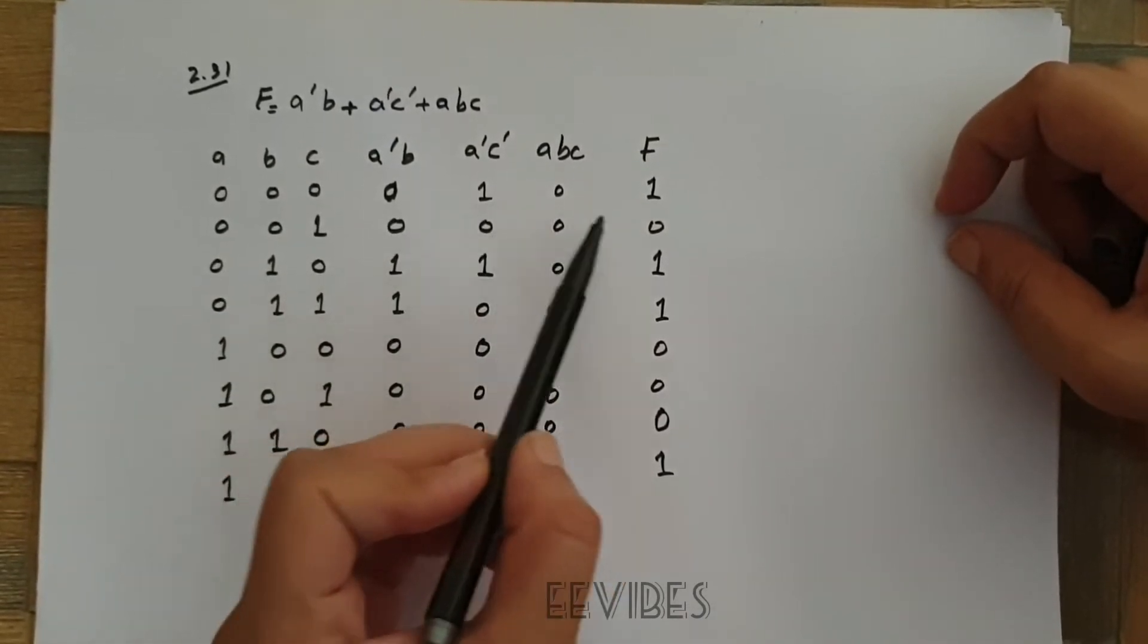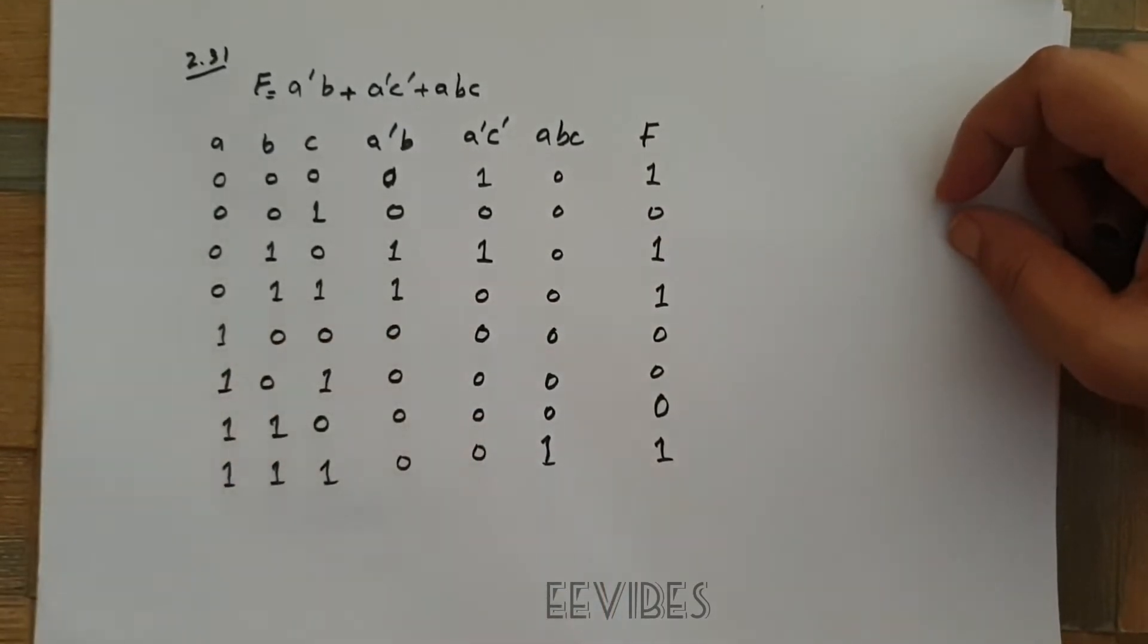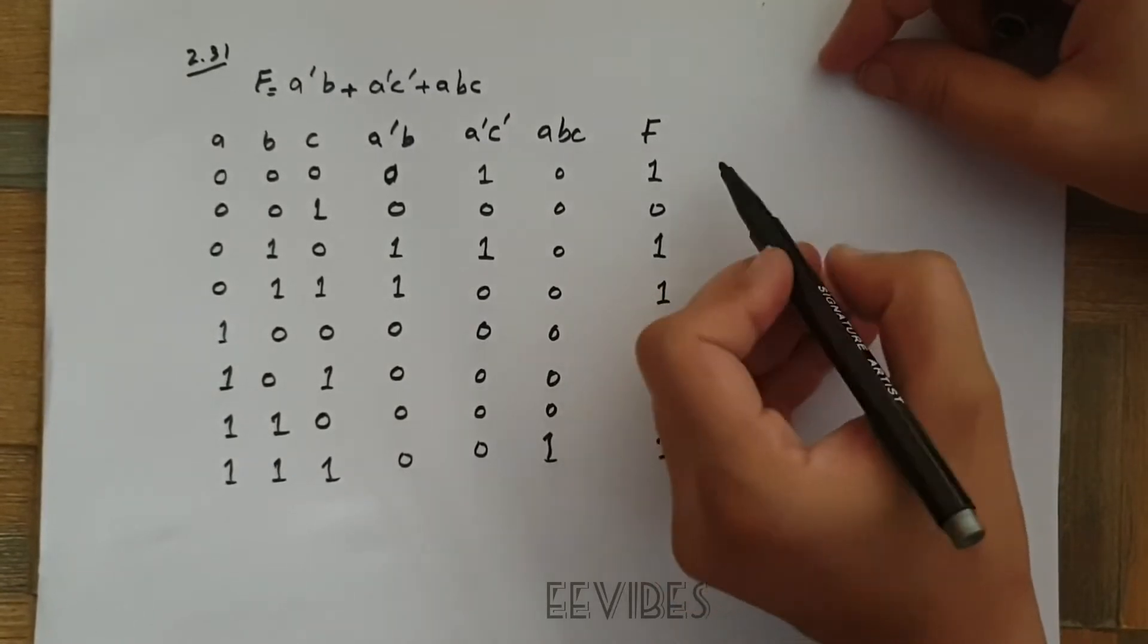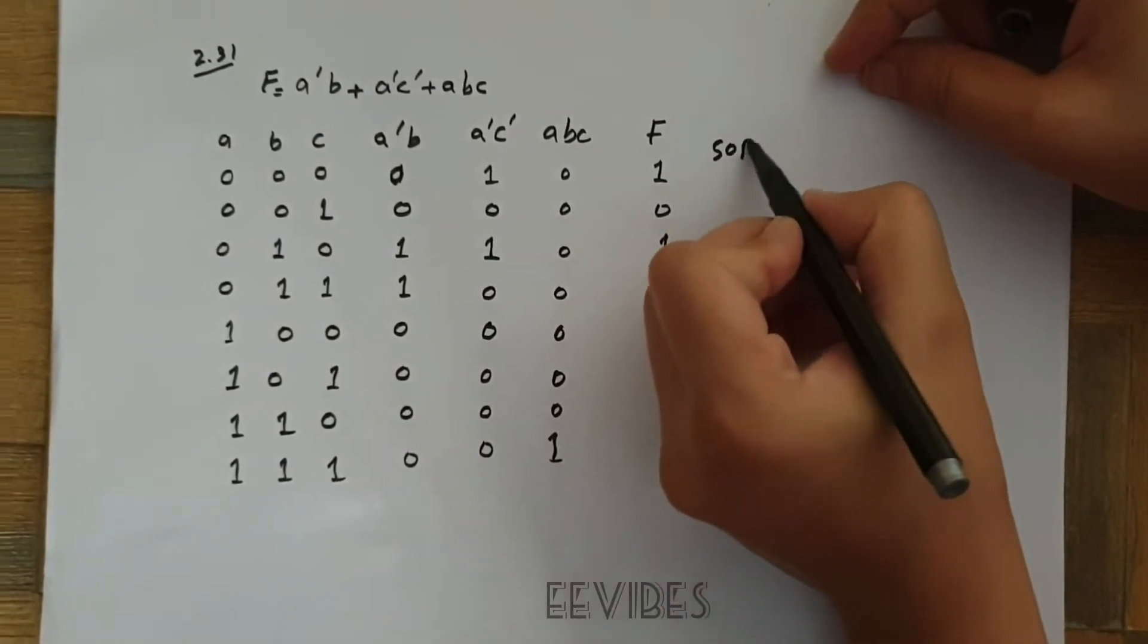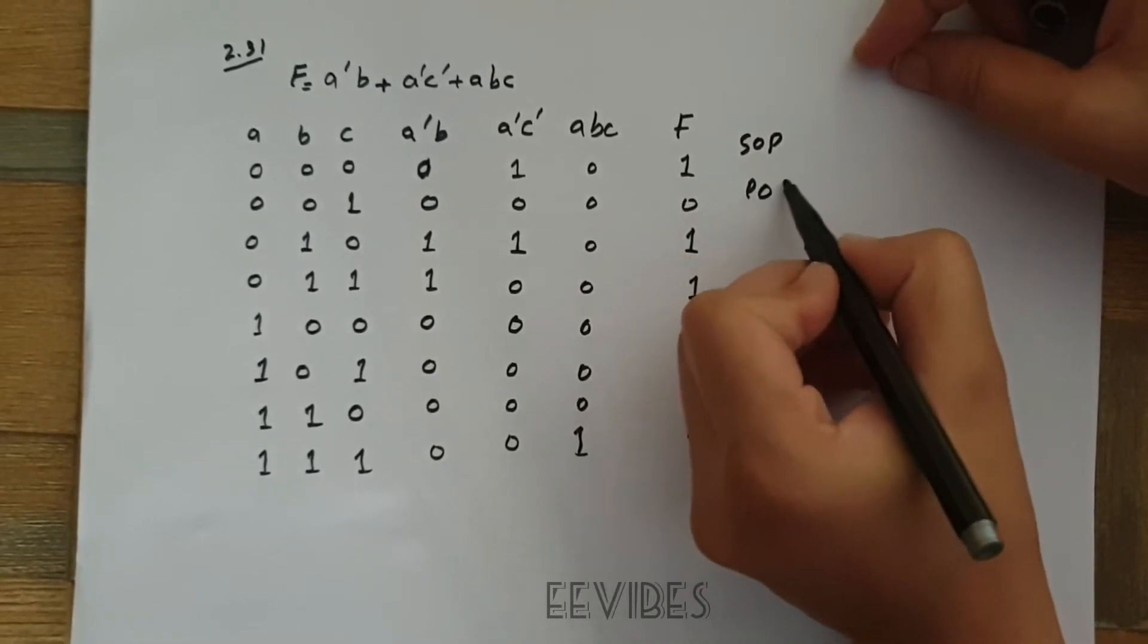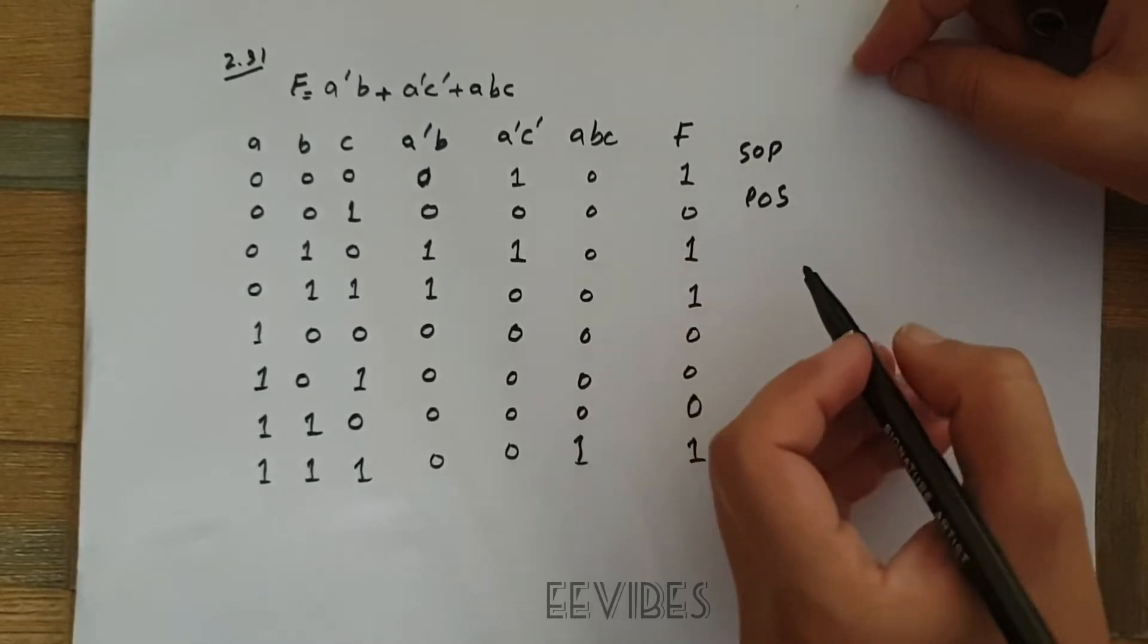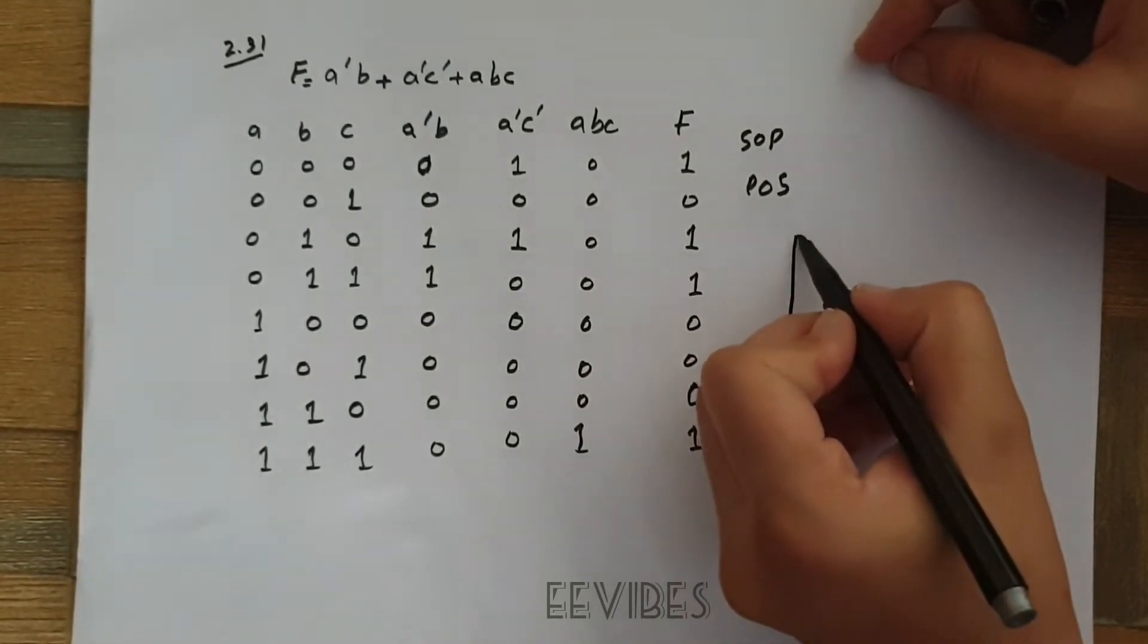Once you have developed the function in the truth table representation, the next step is simply to represent either in the SOP or POS. Since you have been asked to represent the function as the product of sums, so for representing the product of sums